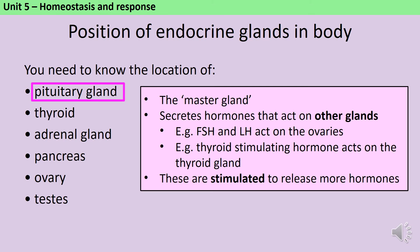The pituitary gland is often called the master gland, because it produces a really wide variety of hormones, and many of these act on other glands so that they produce hormones too, which can lead to a cascade of effects. For instance, the pituitary gland makes both follicle-stimulating hormone and luteinising hormone, and these are sex hormones which have an impact on the ovaries, which go on to produce oestrogen and progesterone.